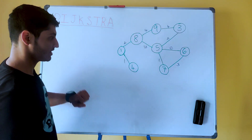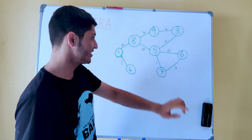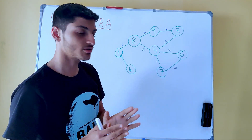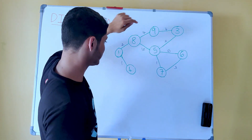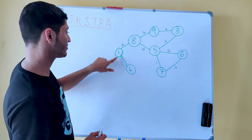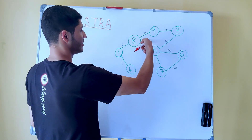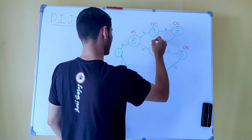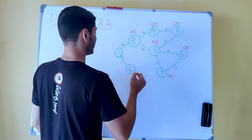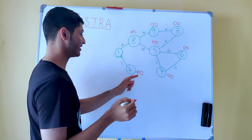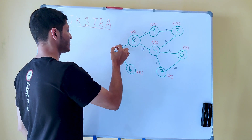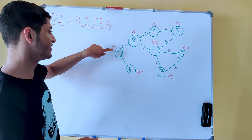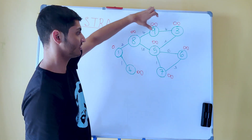Let's start with the actual steps in the algorithm. Initially, we start by initializing all these nodes with a distance value, which is equal to the distances of all these nodes from the source node. Since I have chosen node 1 as my source node, we initialize all the nodes with distance to source node as infinity, and the source node itself is at a distance of 0, because this is the node we are starting from. So this is the initialization part.